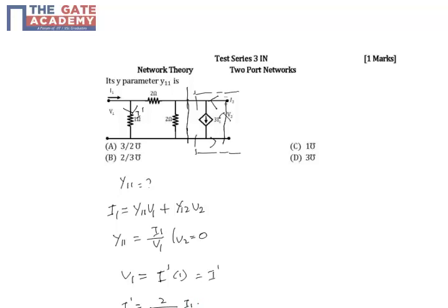I' equals (2/3)I1. This is by applying current division rule, which states that the current passing through a branch equals the total current times that resistance divided by the sum of both resistances.